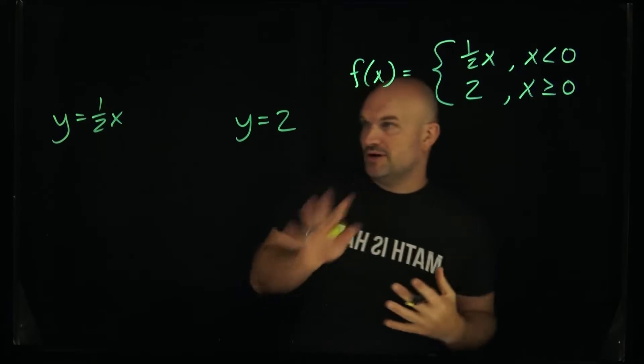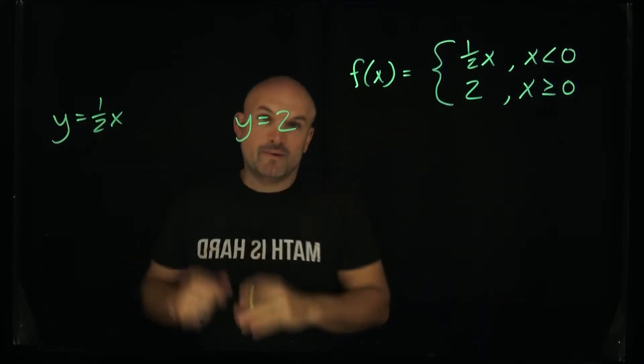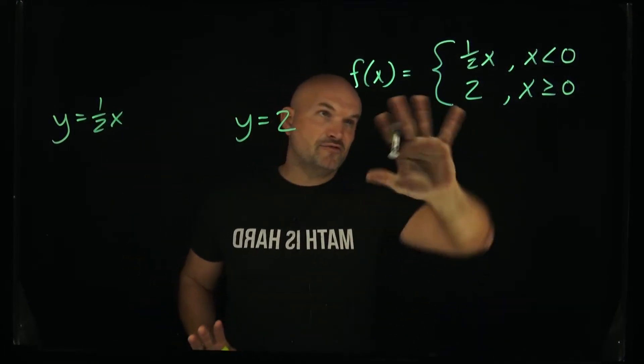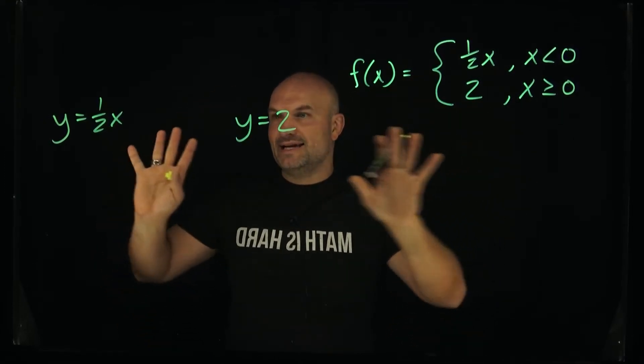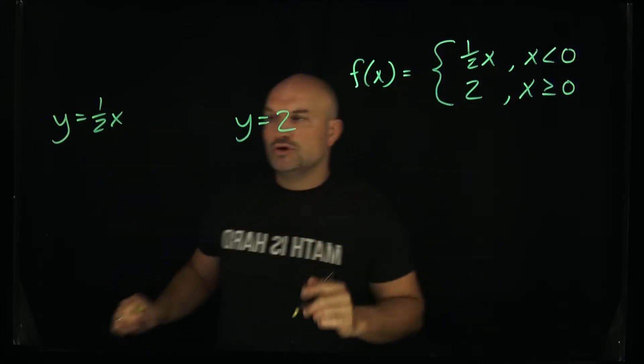Okay, so up to this point if you're graphing a piecewise function you should know how to graph these. Now what I want to do is kind of forget about the constraints, forget about that as a function right now, and just take a look at these two rules separately.